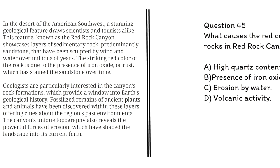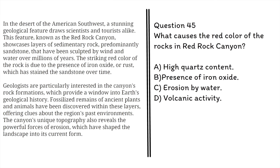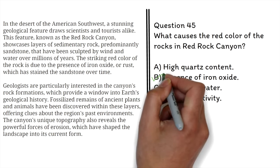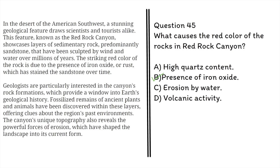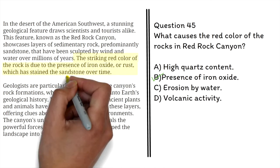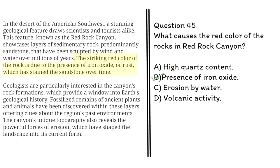Question 45: What causes the red color of the rocks in Red Rock Canyon? A. High quartz content, B. Presence of iron oxide, C. Erosion by water, D. Volcanic activity. The correct answer is B — the presence of iron oxide. From the passage, we know that the striking red color of the rock is due to the presence of iron oxide, or rust, which has stained the sandstone over time.